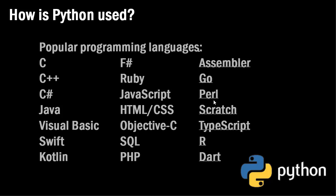So the question is, how is Python used? Because each of these languages have a specific use, usually, or a niche that they fulfill, or a platform they work for. For example, Swift is used for creating iOS applications on the iPhone and iPad. Kotlin is used for creating Android mobile apps. Visual Basic is used a lot in smaller businesses. HTML and CSS, which is a scripting language rather than a programming language, is used for web development, as is JavaScript. Dart is used for cross-platform.